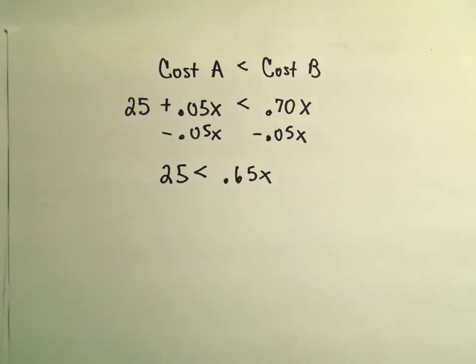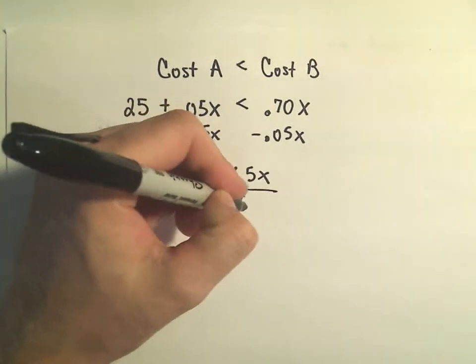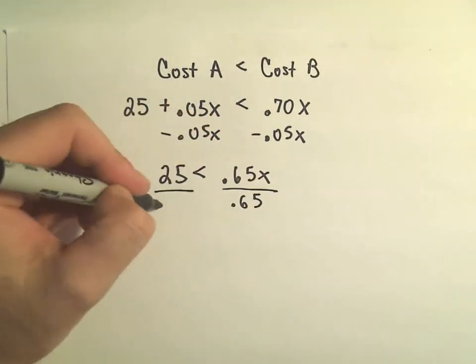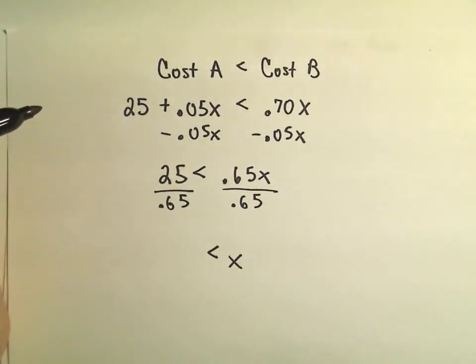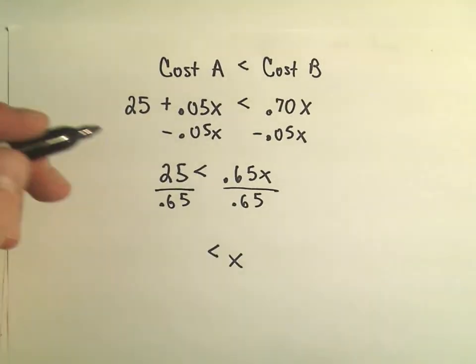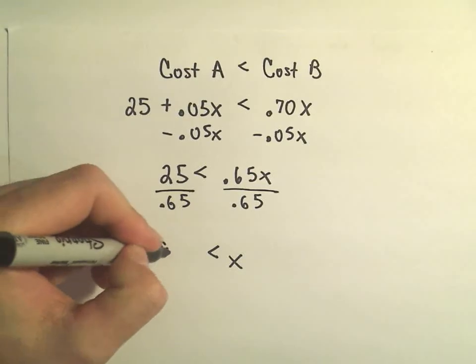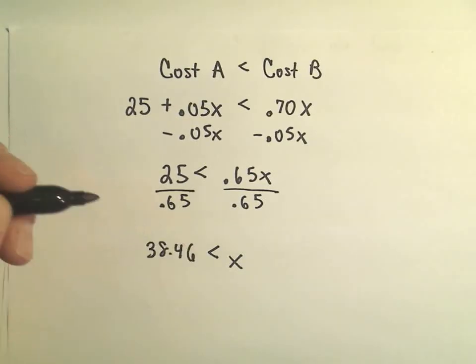And now all we're going to do is divide both sides by 0.65, and that's going to give us our answer. So if I take 25 and divide it by 0.65, I'm getting that to be 38.46 miles.